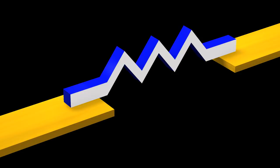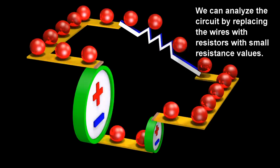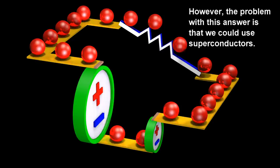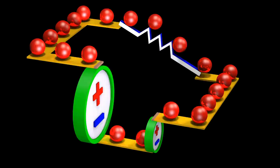Therefore, we can analyze the circuit by placing the wires with resistors with small resistance values. However, the problem with this answer is that we could use superconductors. A superconductor has zero resistance.